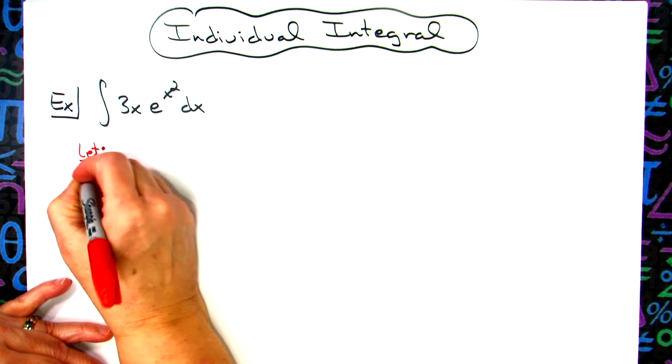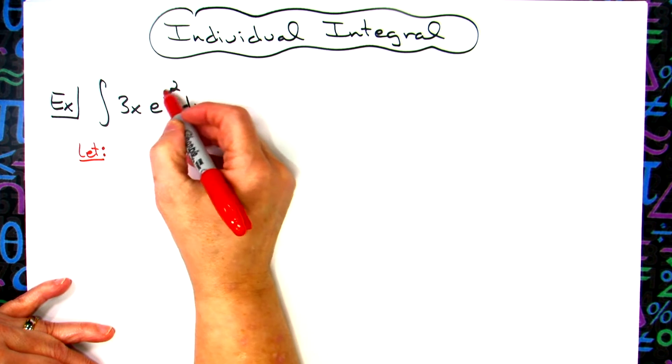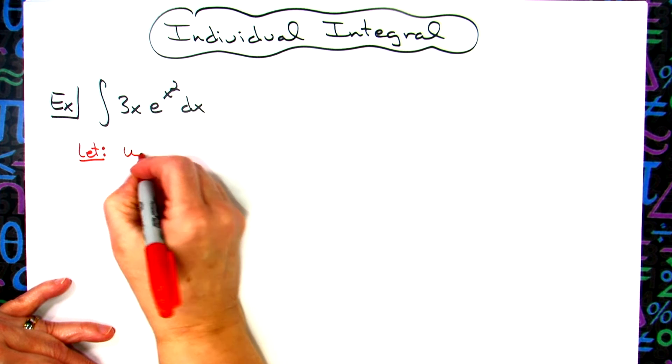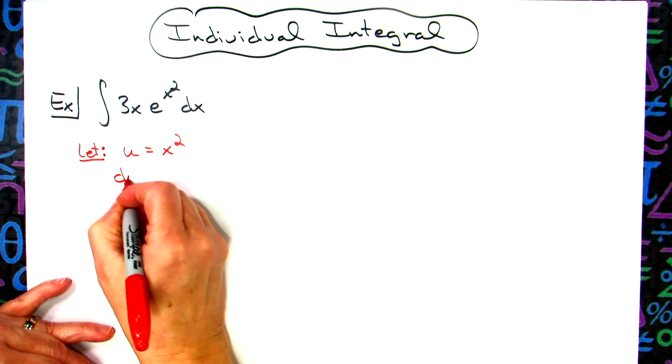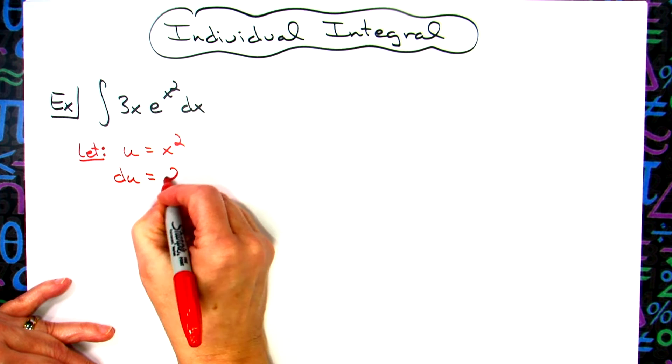So we're going to start by letting our u be the exponent right here on the e. We're going to say u is equal to x squared. I'm going to take the derivative of both sides. I'll have du is equal to 2x dx.